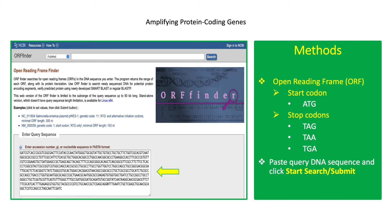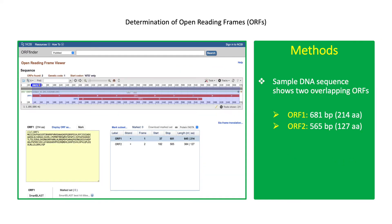If the gene of interest is a protein-coding gene, one will look for the start and stop codons. Paste the DNA sequence into the query text box and click Submit. In this example, a DNA fragment sequence shows two overlapping ORFs.